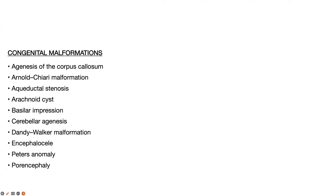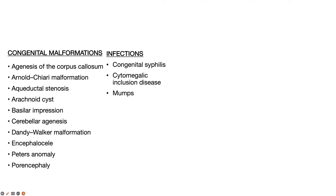Among congenital malformations, the four important ones are agenesis of corpus callosum, Arnold-Chiari malformation, aqueductal stenosis, and Dandy-Walker malformation. Infectious causes include congenital syphilis, cytomegalovirus inclusion disease, mumps, post-bacterial meningitis, post-viral encephalitis, and toxoplasmosis — an important congenital infection. Mumps and toxoplasmosis are particularly prone to cause hydrocephalus and should always be remembered.